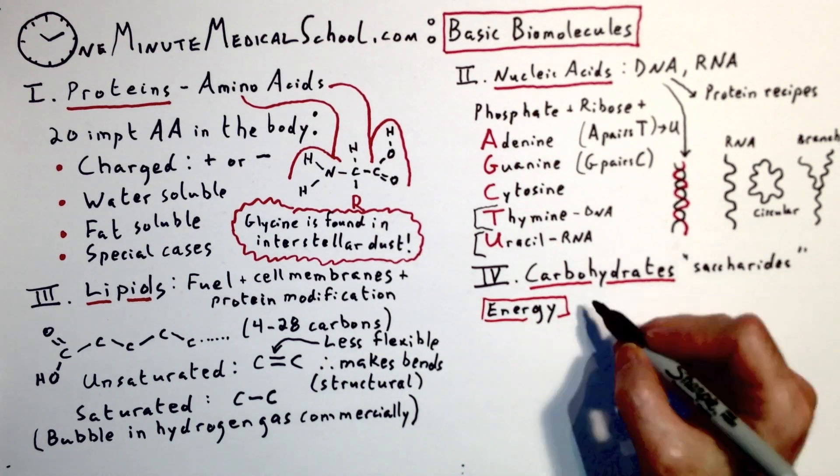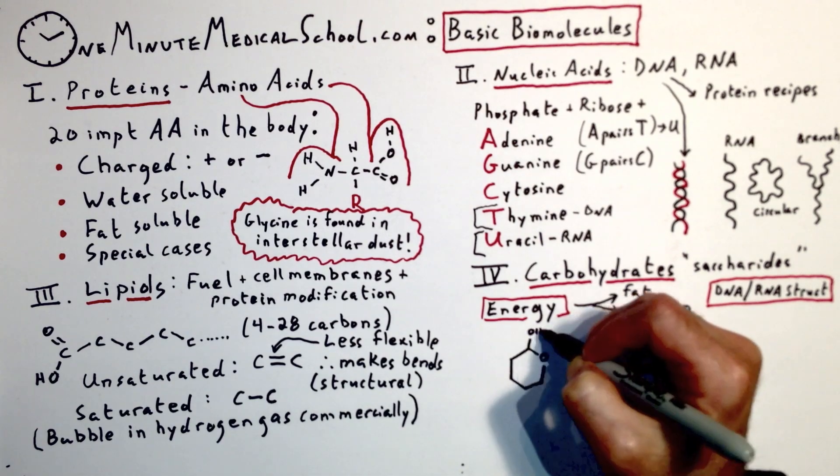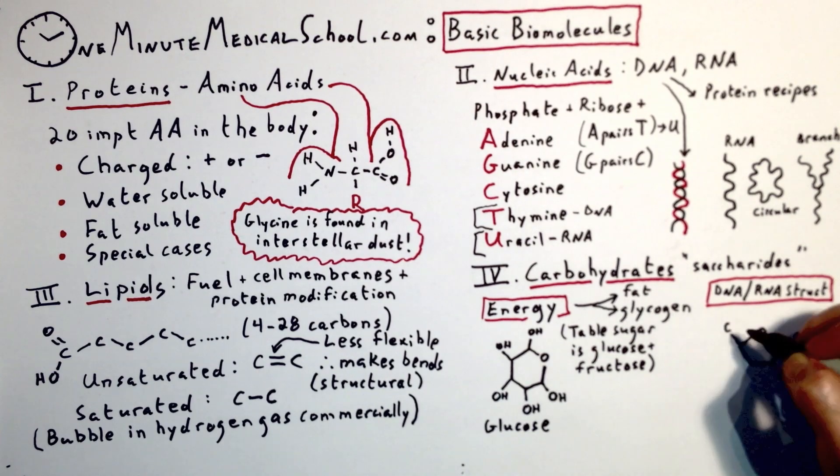Carbohydrates are the saccharides, the sugars. They're used for energy or for DNA and RNA structure. The most common energy molecule is glucose. This is found in table sugar, where it's combined with fructose.